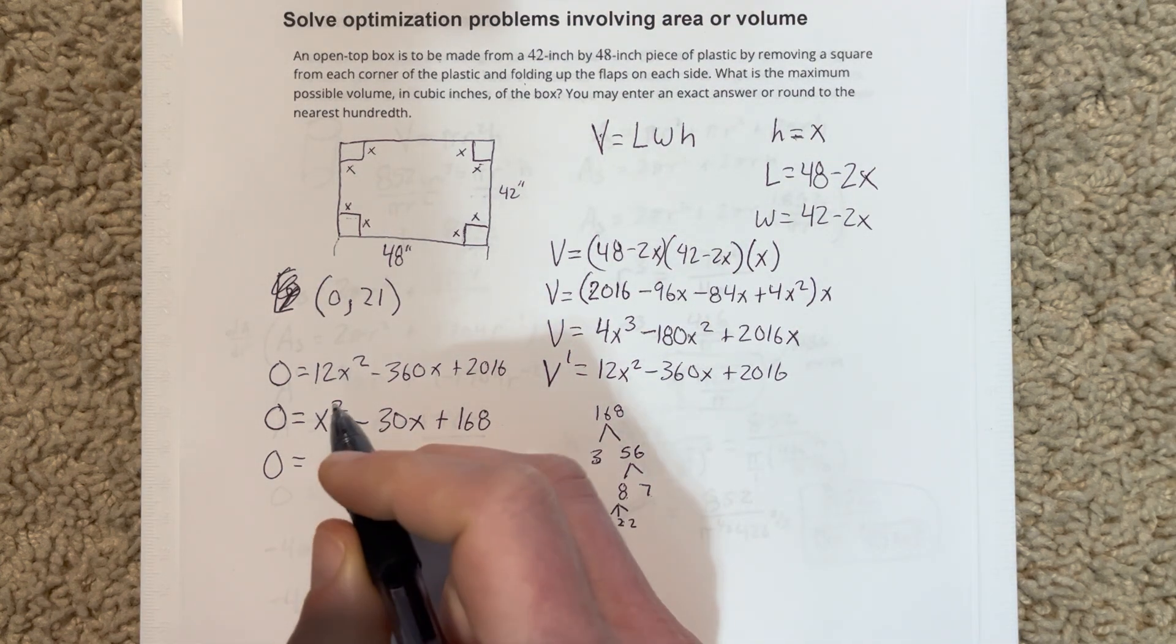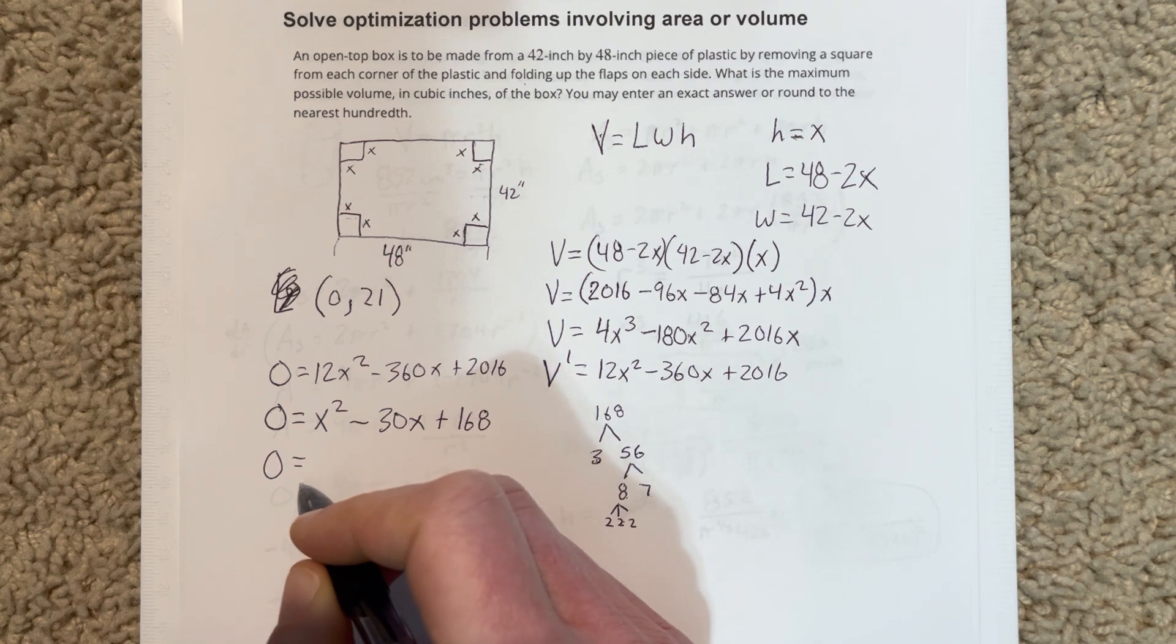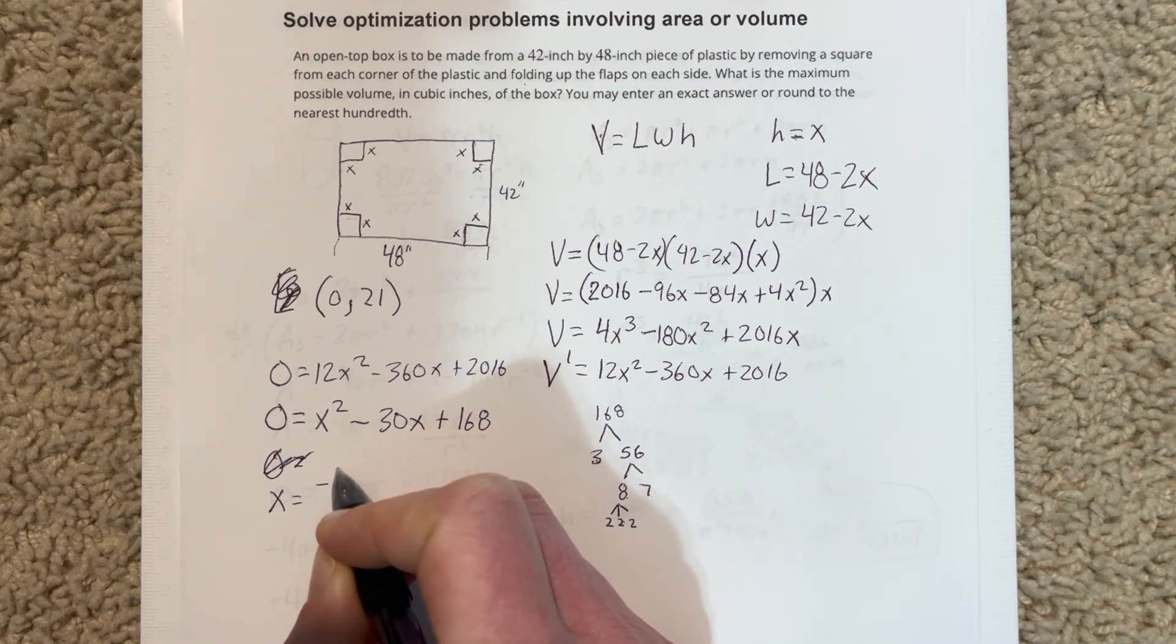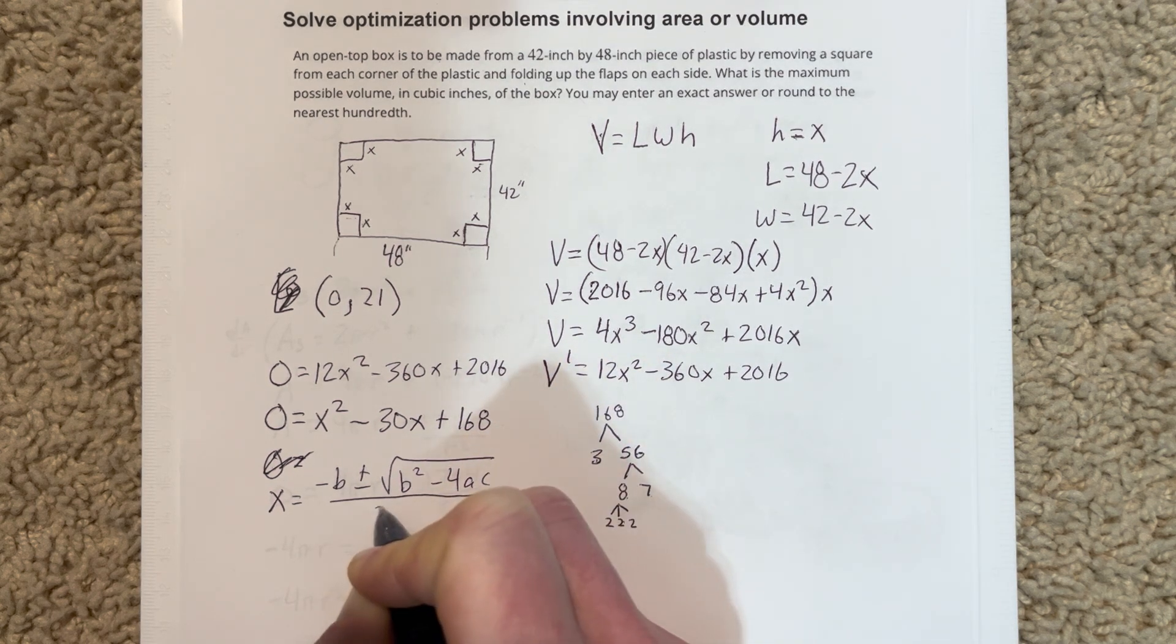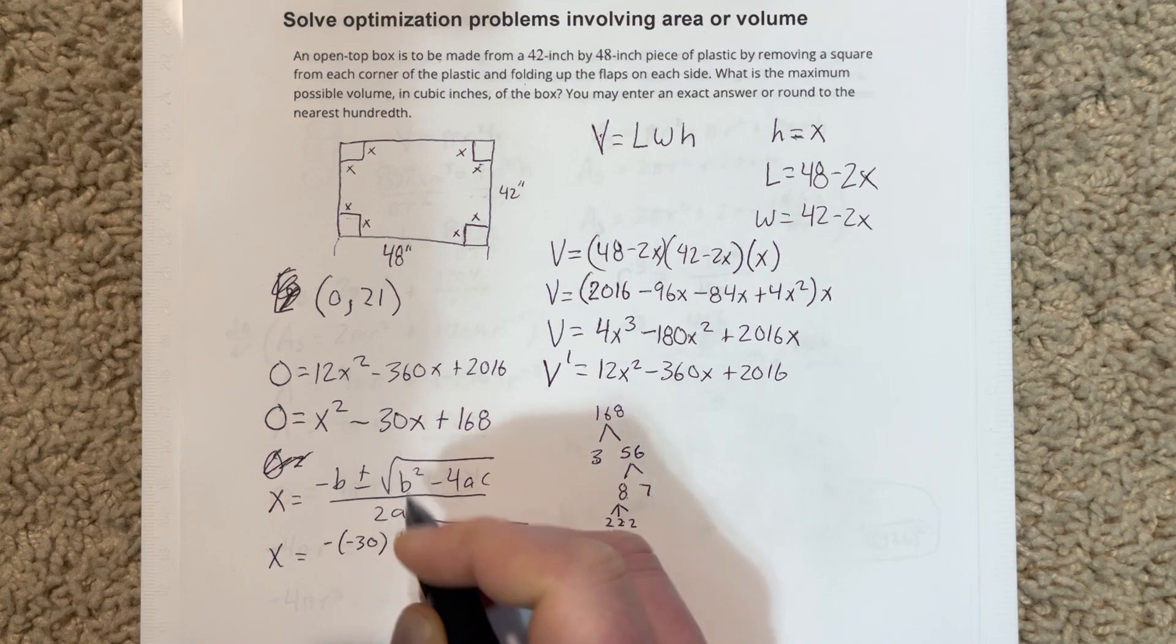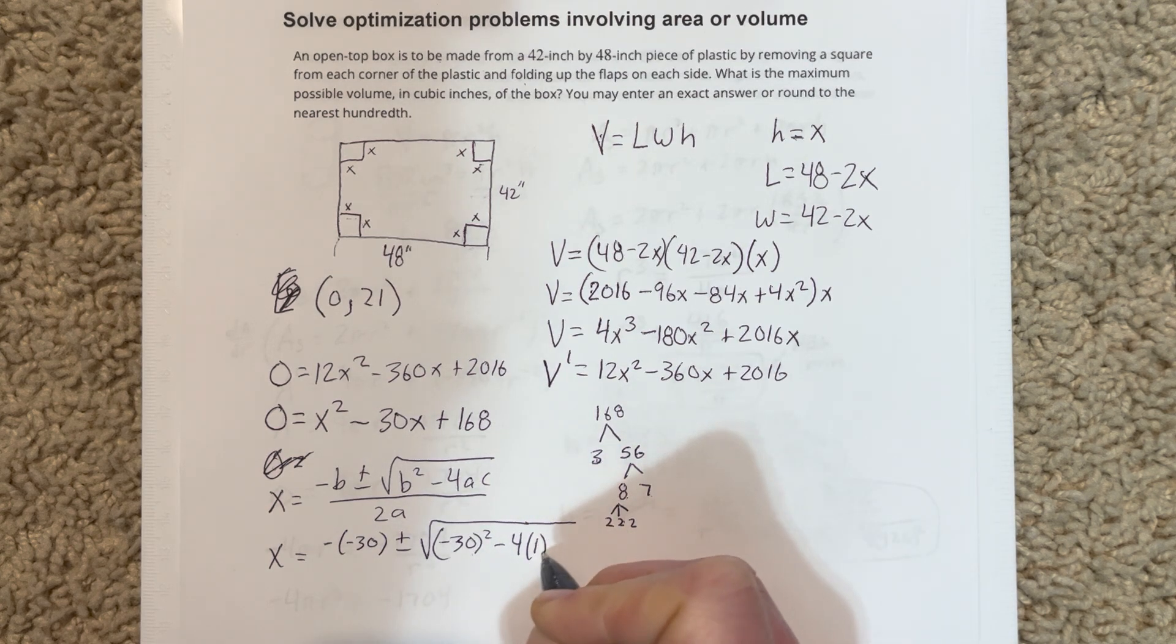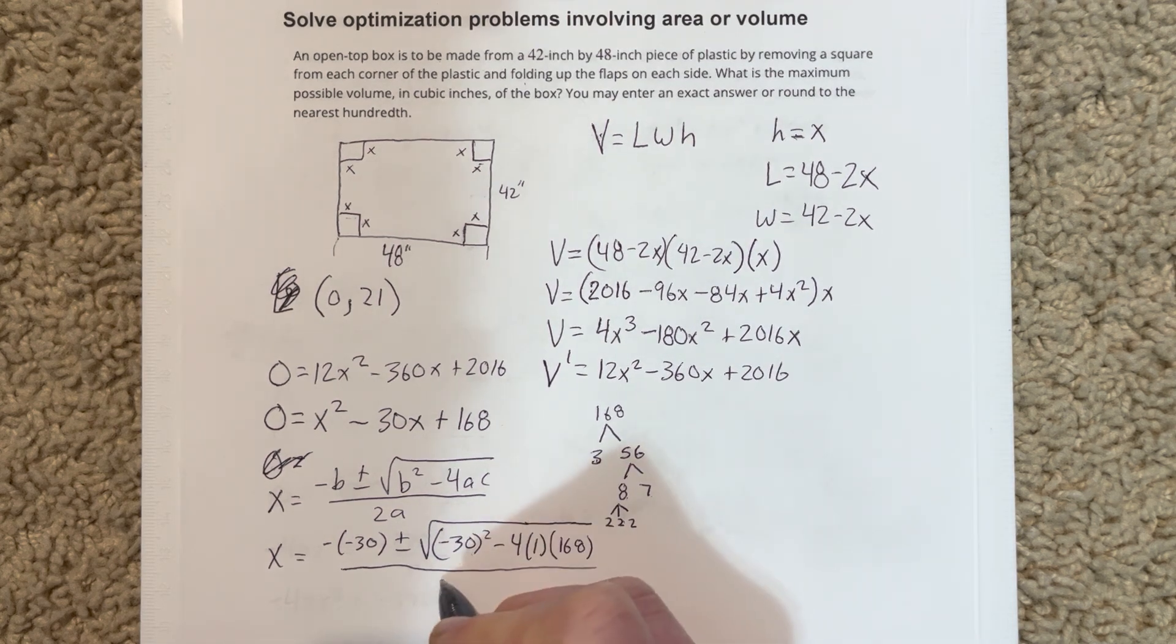So let's jump right into the quadratic formula then. So if we do that, we're going to say that, got it equal to zero, I'm going to kind of cross this out. Quadratic formula, we're going to say X is equal to negative B plus minus root B squared minus 4AC all over 2A. So X is going to equal that'd be negative negative 30 plus minus root B squared minus 4 times A, which is 1, times 168 here, all over 2 times 1.